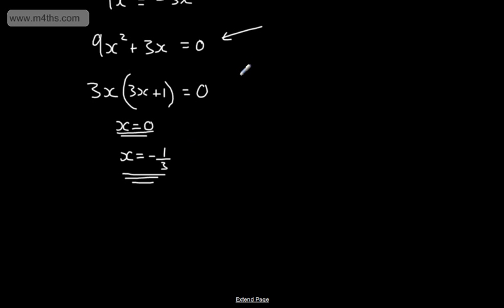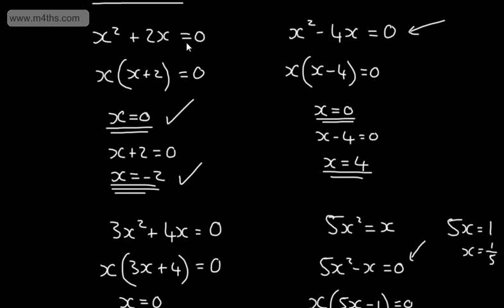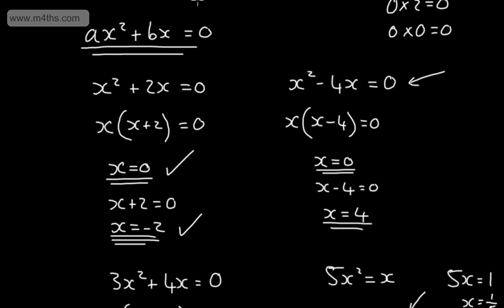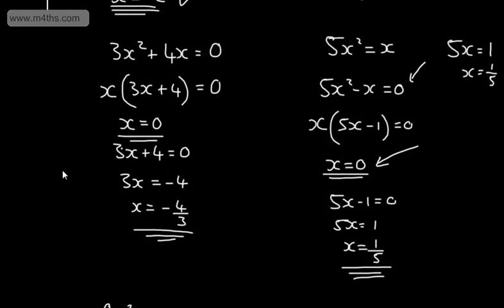If you wanted to graph this equation — let's use a slightly simpler one — the solutions correspond to where the parabola crosses the x-axis. Remember, this is the x-axis and this is the y-axis. We'd have one solution at the origin (0, 0) and one at (negative 2, 0). So our parabola comes through both of those points. The parabola is the quadratic graph, and these intercepts are the solutions.